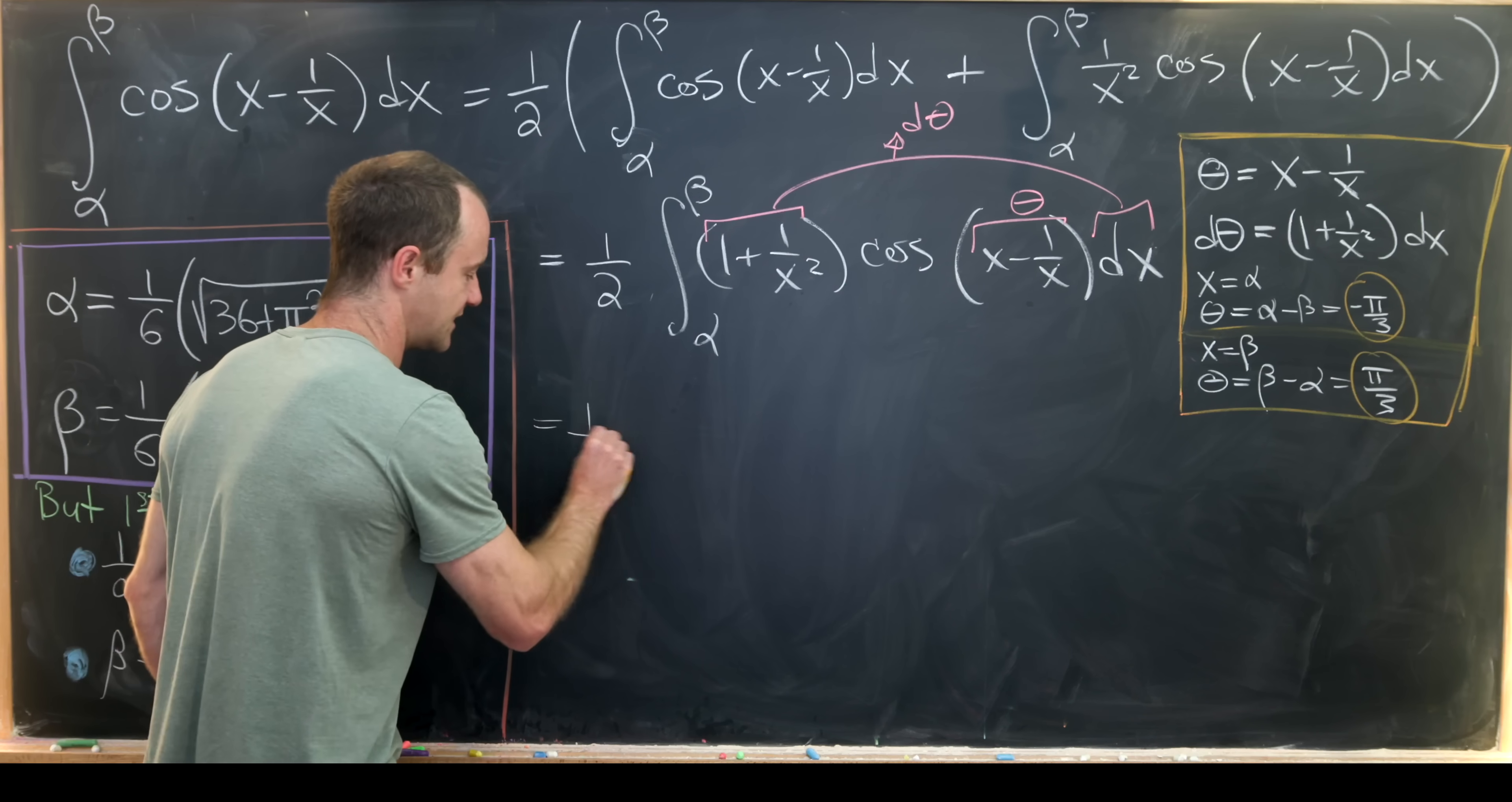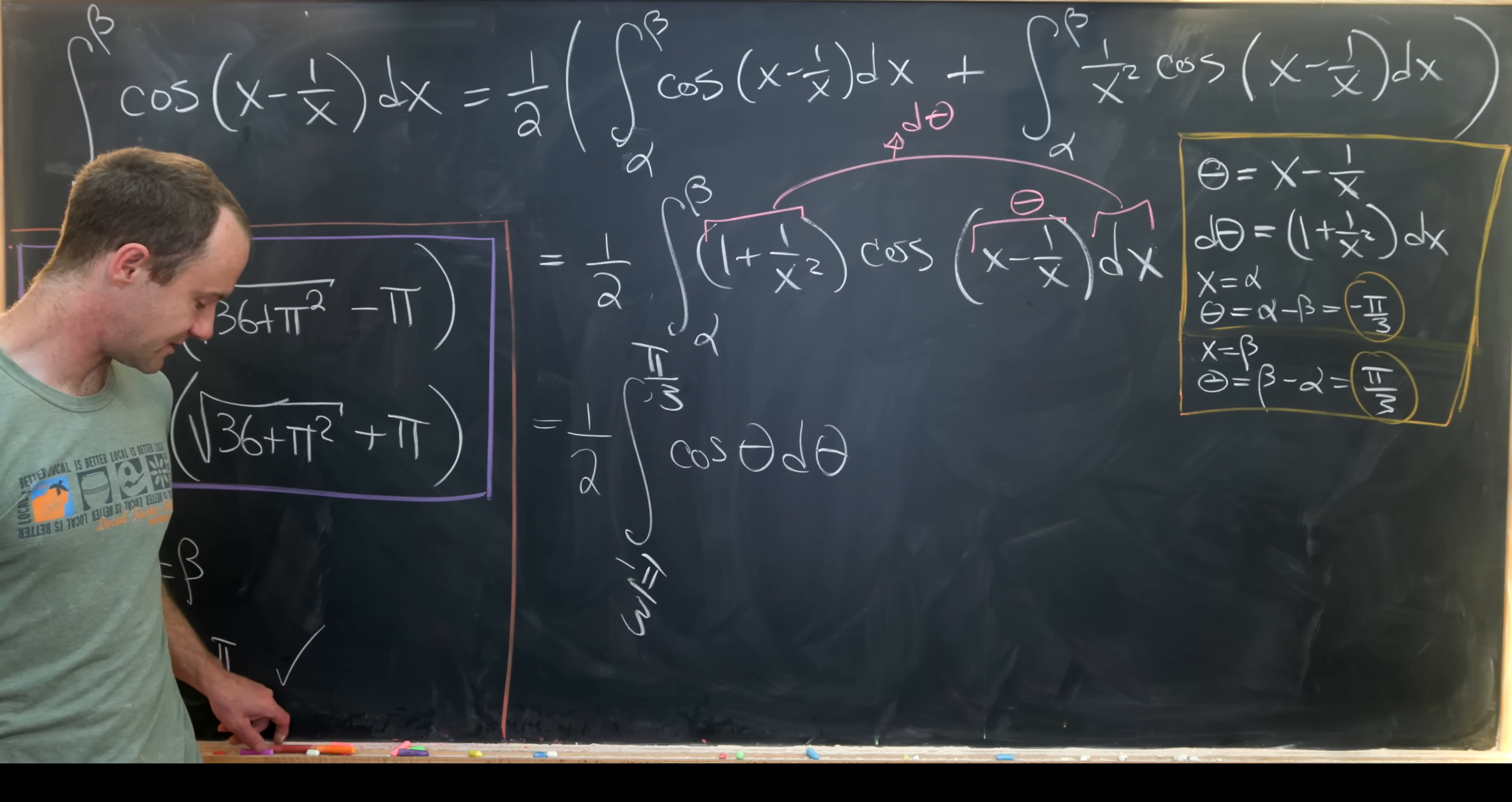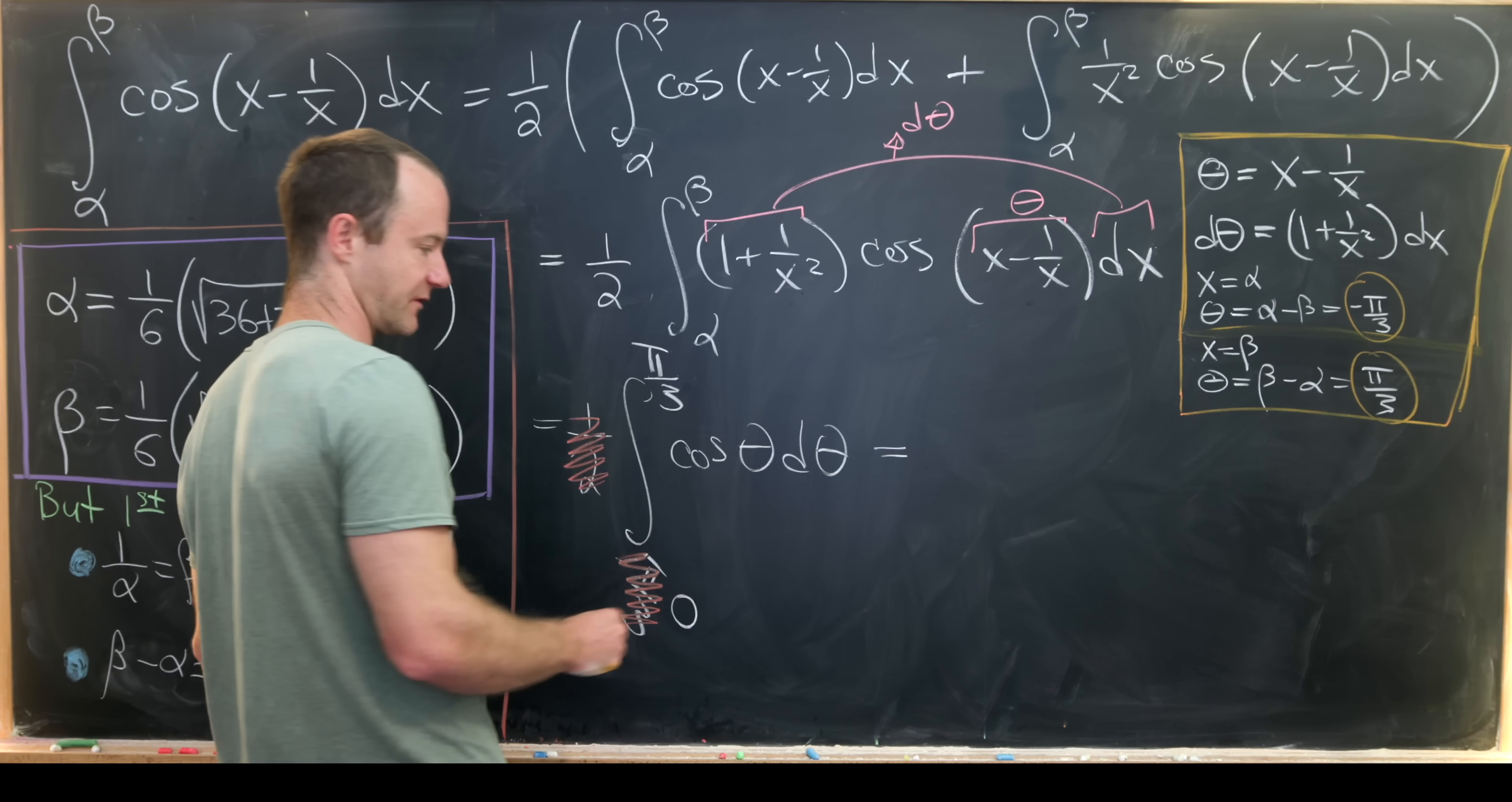Okay so in the end we can write this as 1 half and then we have the integral from minus pi over 3 to pi over 3 of the cosine of theta d theta when all is said and done. But now we use again the fact that the cosine is an even function and we're integrating over a symmetric region of integration to instead integrate from 0 to pi over 3 by multiplying this thing by 2 which cancels the half out.